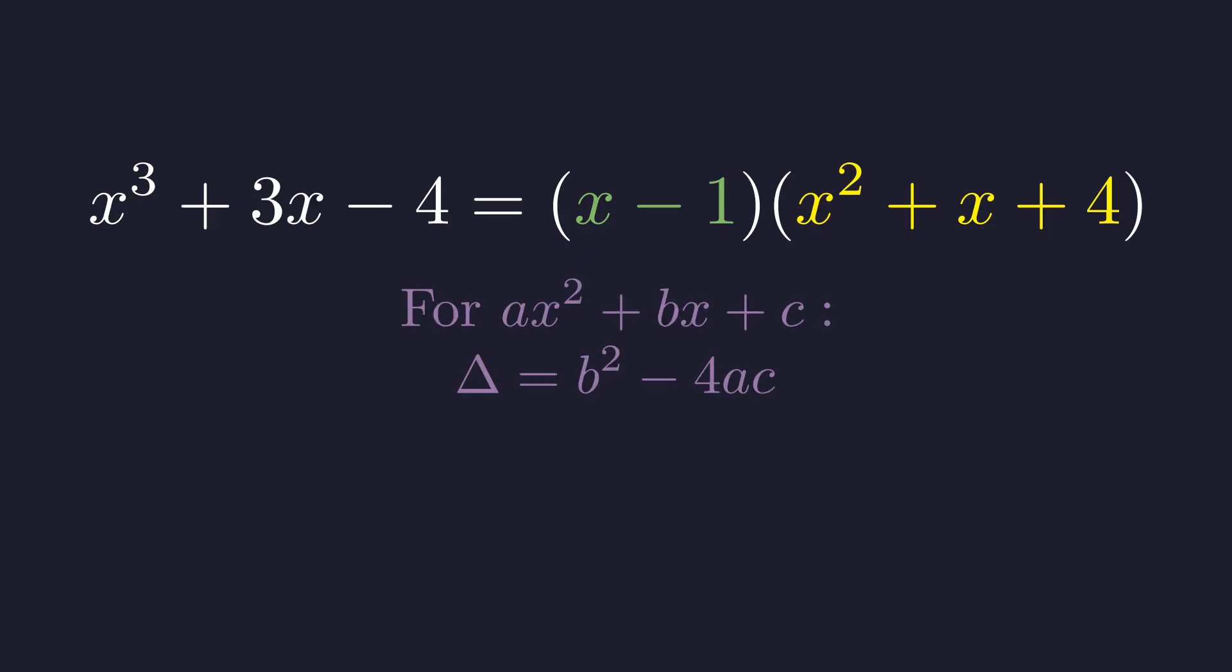Quick reminder. The discriminant tells us how many real solutions a quadratic has. If it's negative, there are no real solutions, only complex ones.